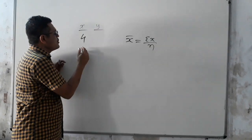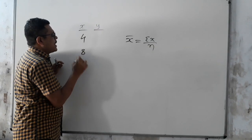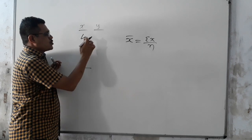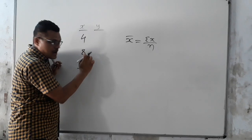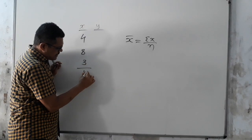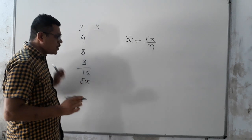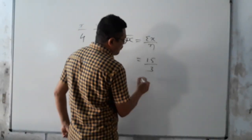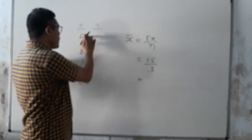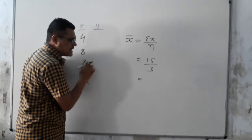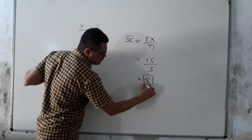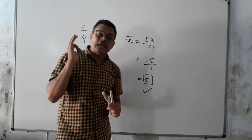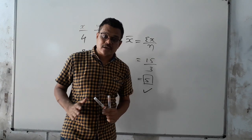For example, X is equal to 4, 8, and 3. So total: 4 plus 8 is 12, 12 plus 3 is 15. So ΣX is equal to 15. Therefore X̄ = 15 upon 3, because the number of observations is 3. Your answer will be 5 — a non-fraction answer.